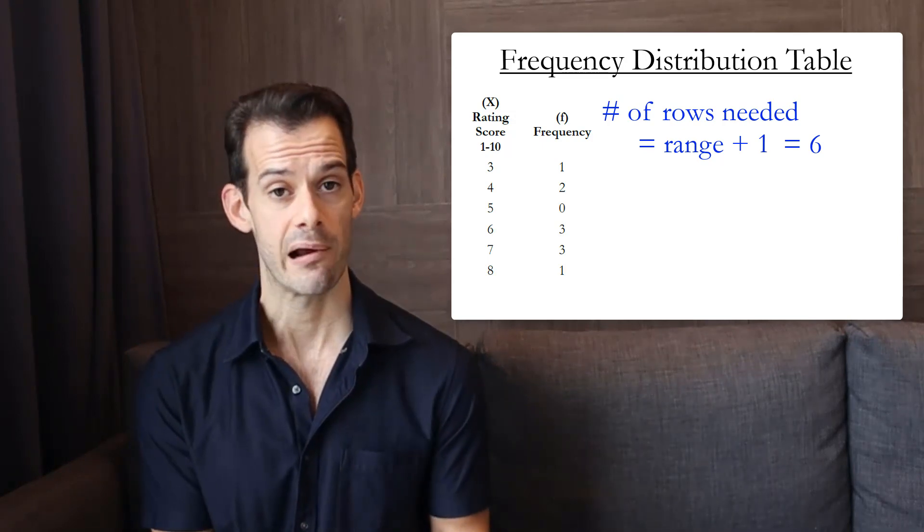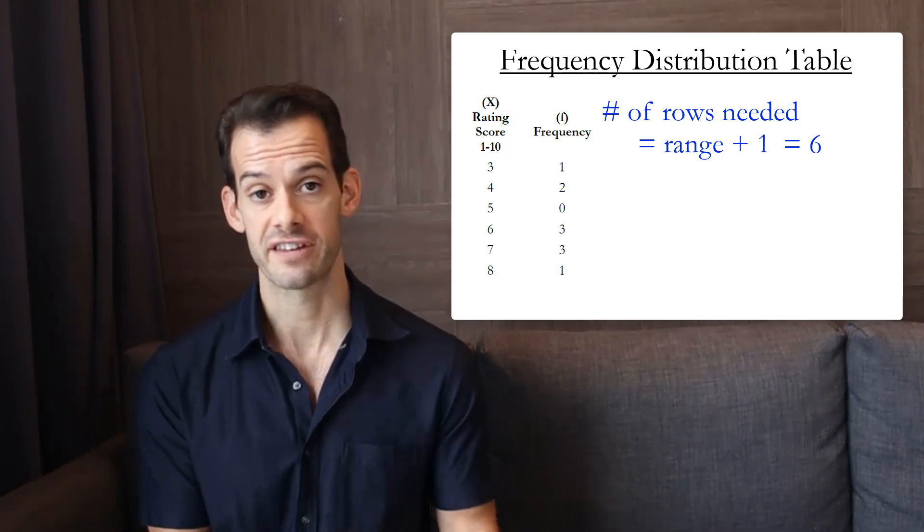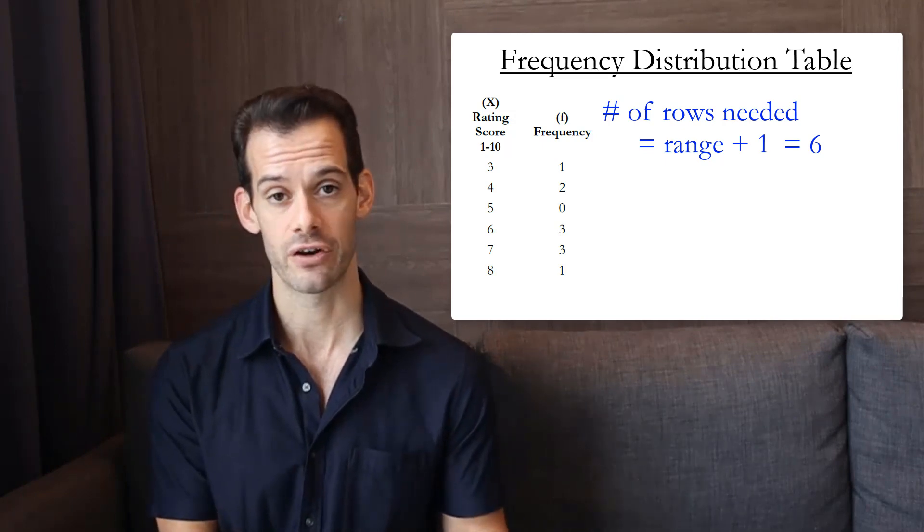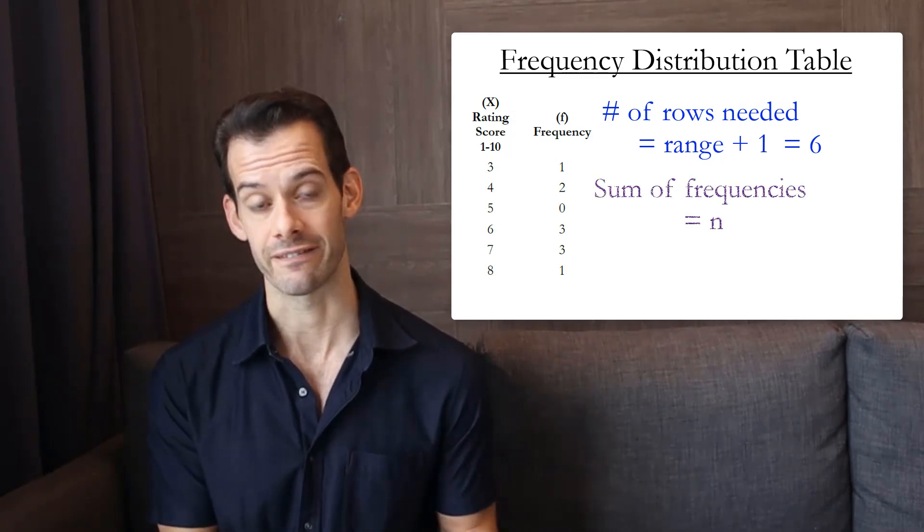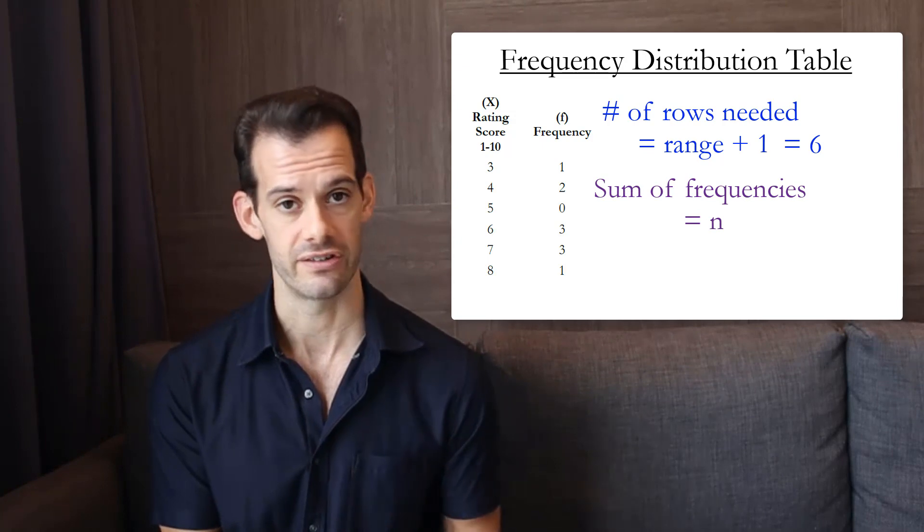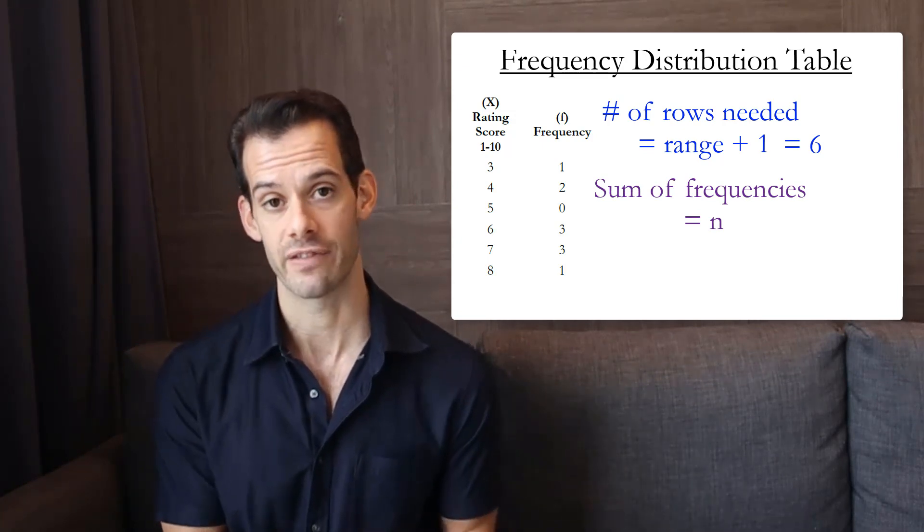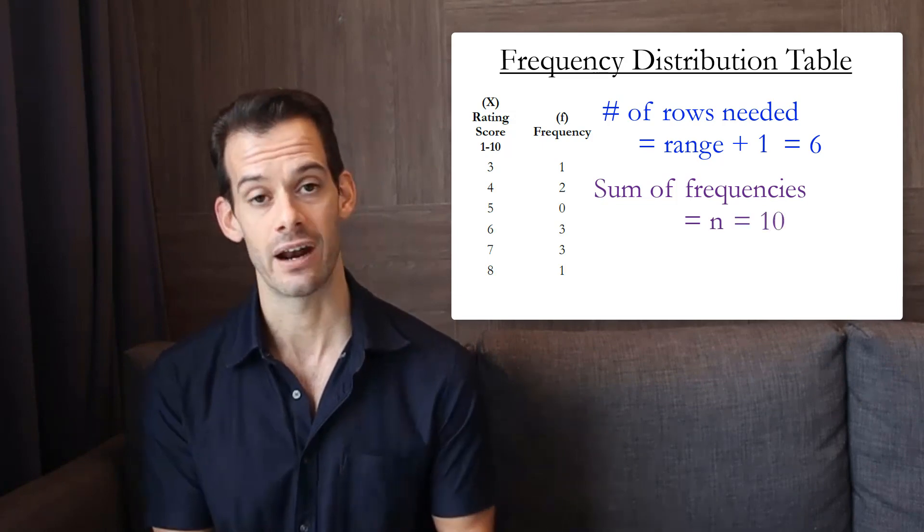From this table we can figure out a few things about our sample. The first thing we can do is figure out how many scores we actually had in our sample. So all we have to do to find this is find sigma f, that's the sum of all the frequencies. If we add up the frequencies of all the scores then this will give us the n that we had for the sample. And in this case we had an n of 10.